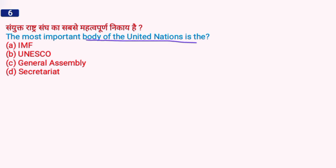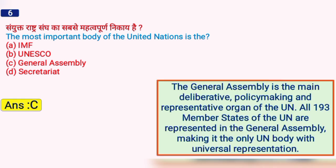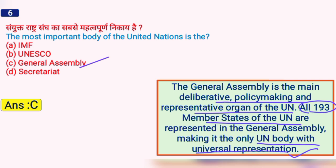The most important body of the United Nations is which one? The right answer is option C, the General Assembly. The General Assembly is the main deliberative, policymaking, and representative organ of the UN. All 193 member states are represented in the General Assembly, making it the only UN body with universal representation.